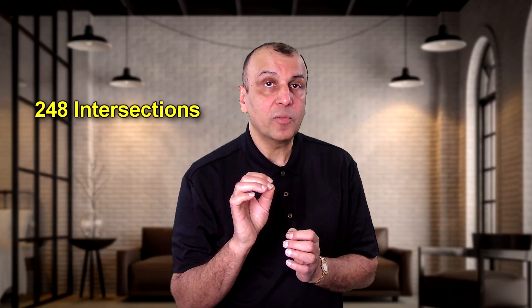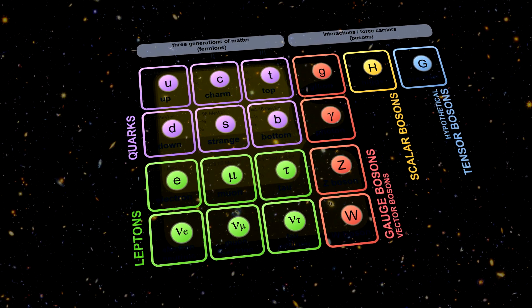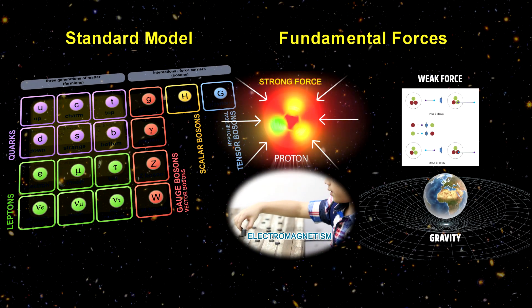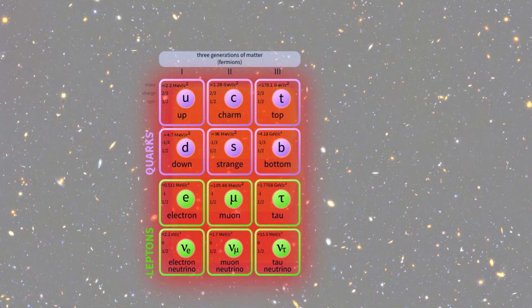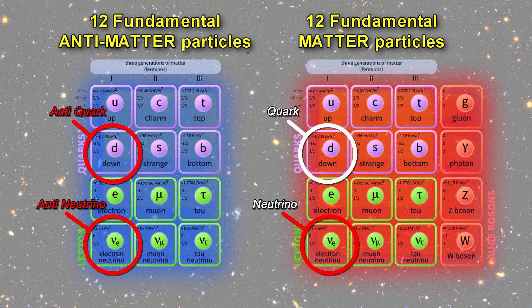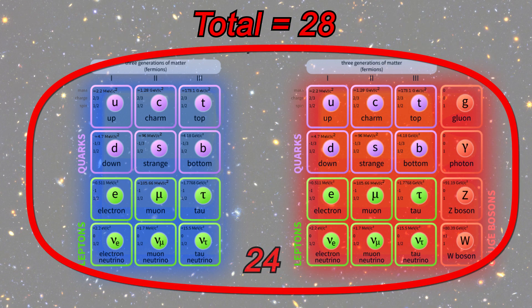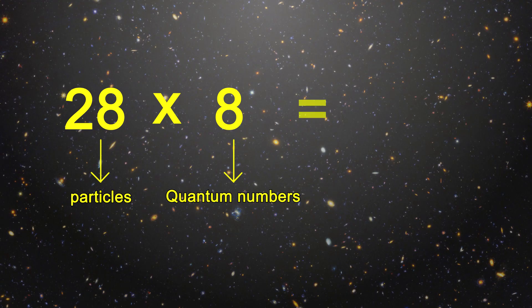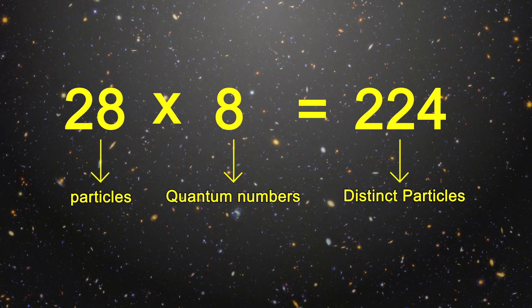Our best understanding of the universe is represented by the standard model. According to it, there are 4 fundamental forces in nature: strong force, weak force, electromagnetism, and gravity. And there are 12 fundamental particles. In addition, each of these particles has an anti-particle of itself — for example, an anti-quark or anti-neutrino. In total, these make up all the elementary particles, and there are exactly 28 of them: 24 elementary particles and 4 force carrier particles. Each of these distinct elementary particles has 8 quantum numbers assigned to it, based on the charges each particle has. This brings the total number of particles to 224 — 8 times 28.